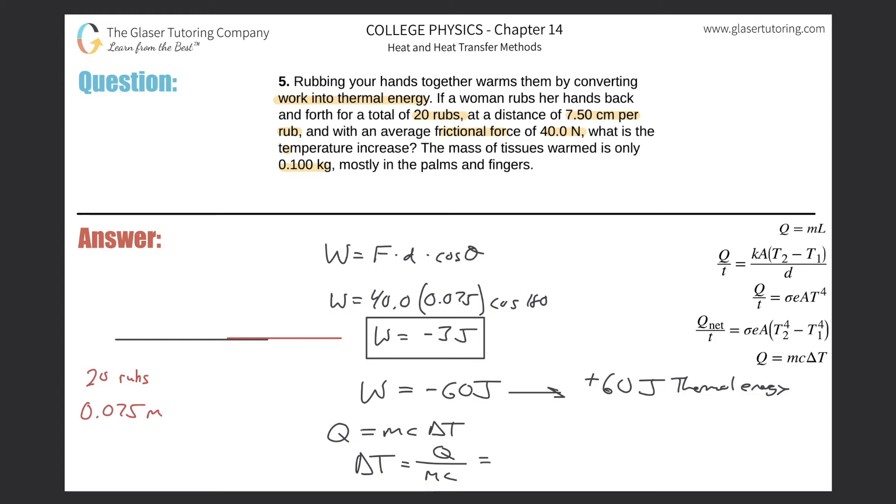Now we need to plug in the heat value, so it was 60 joules. What's the mass? They said the mass that was actually warmed up was going to be 0.100 kilograms. Then we need to know the specific heat of the tissue. I don't remember this off the top of my head, so I gotta go look back.